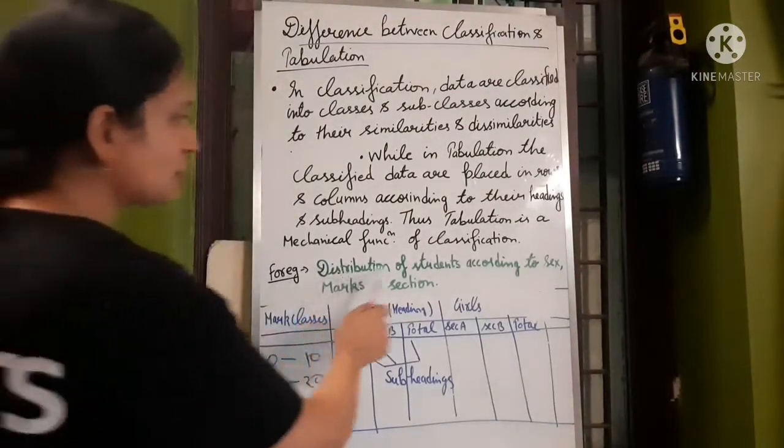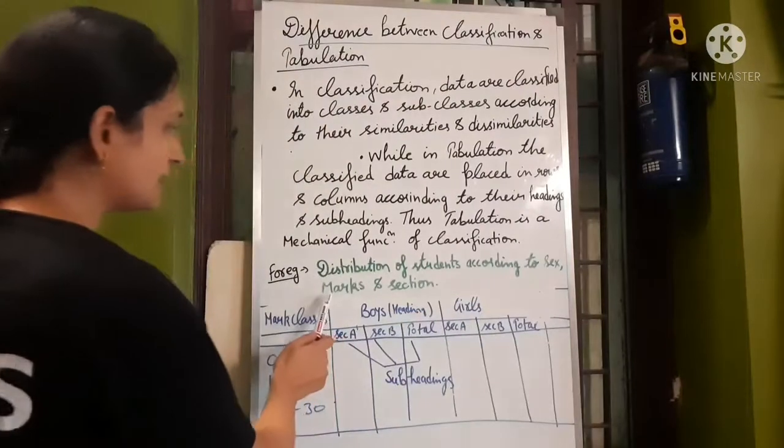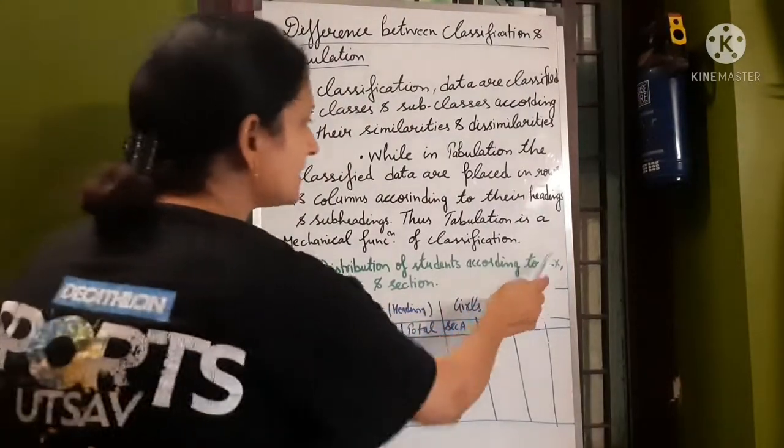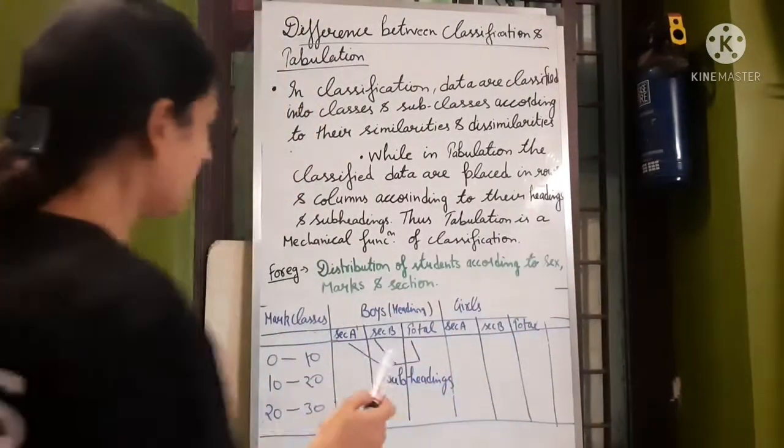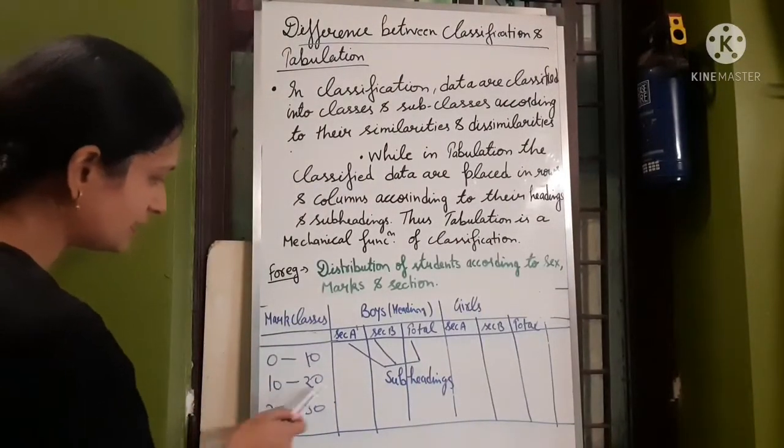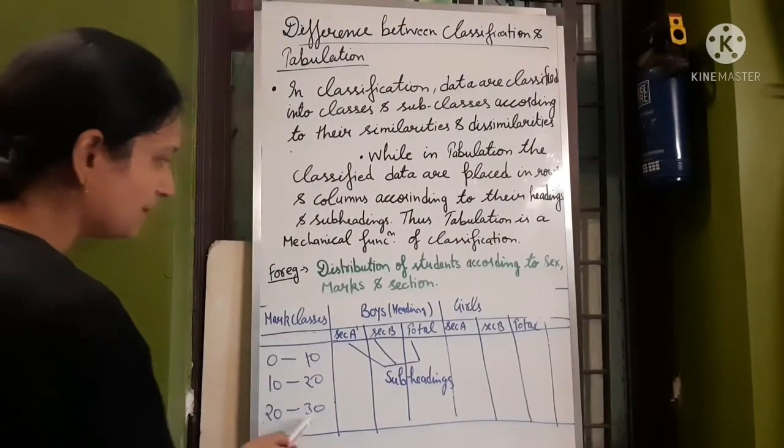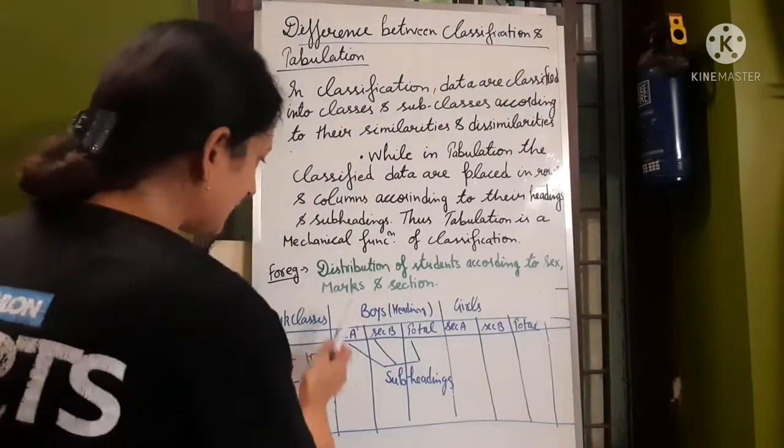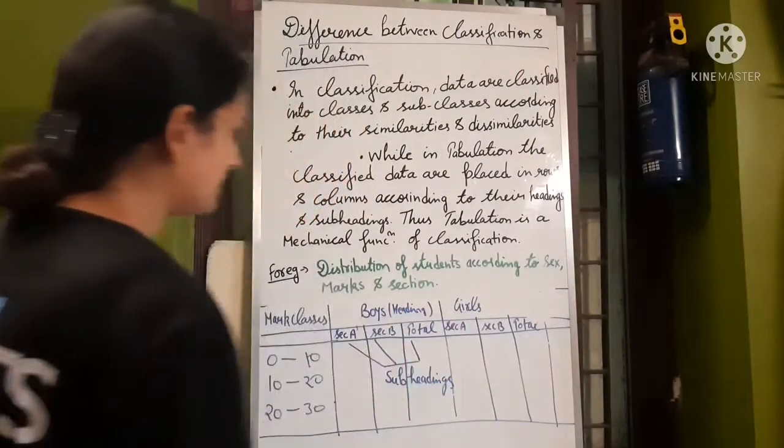Now look, distribution of students according to sex, marks and sections. What is the sex? Boys and girls. Now look, these are mark classes: 0-10, 10-20, 20-30. In these classes, this data will be followed.